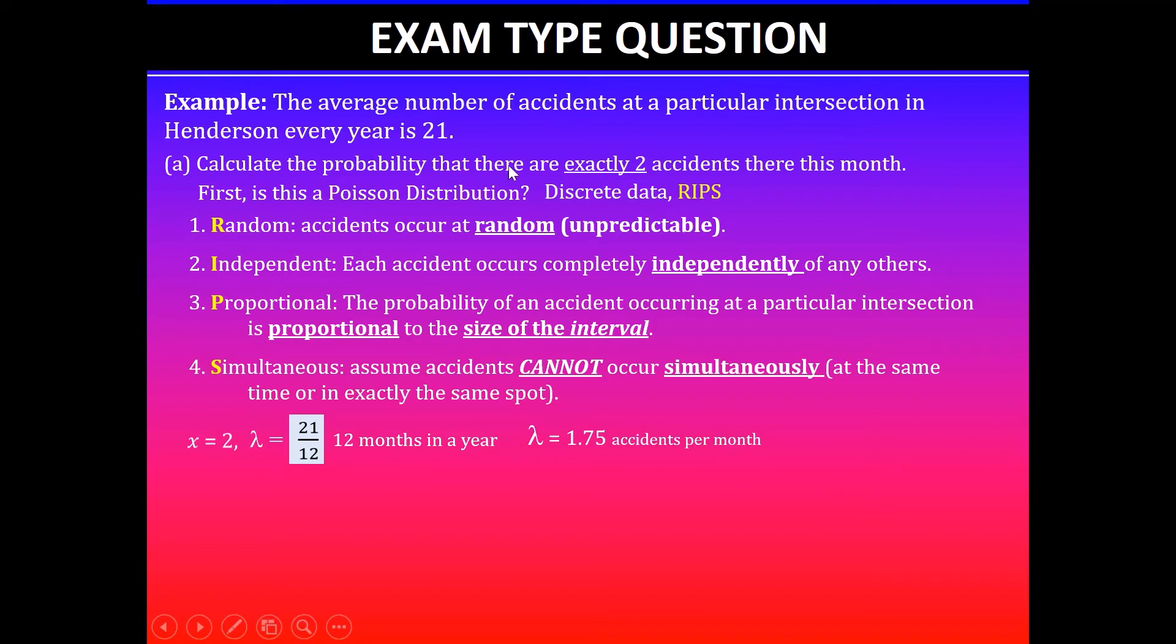Why I need to change this to a month: because the question says calculate the probability that there are exactly two accidents this month. So now this is in proportion to the size of the interval. Instead of every year, we are after one month.